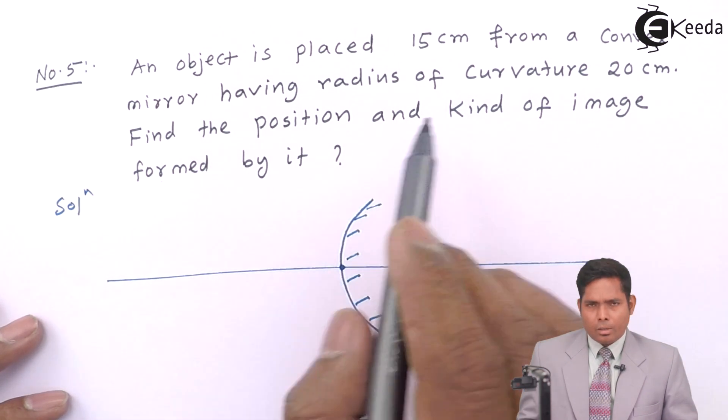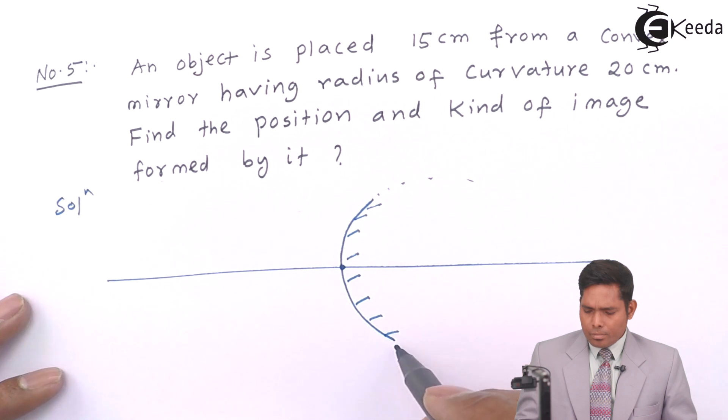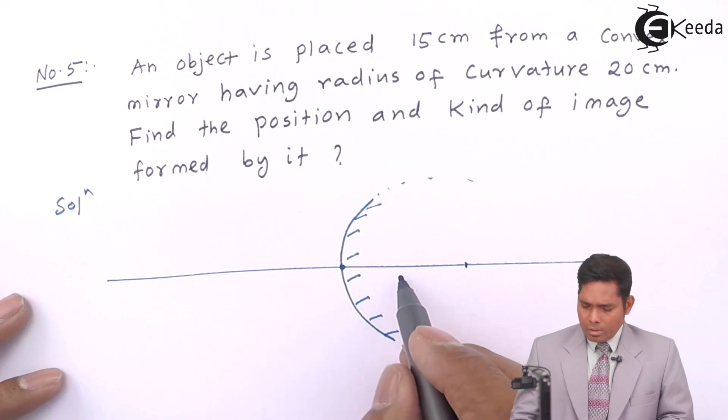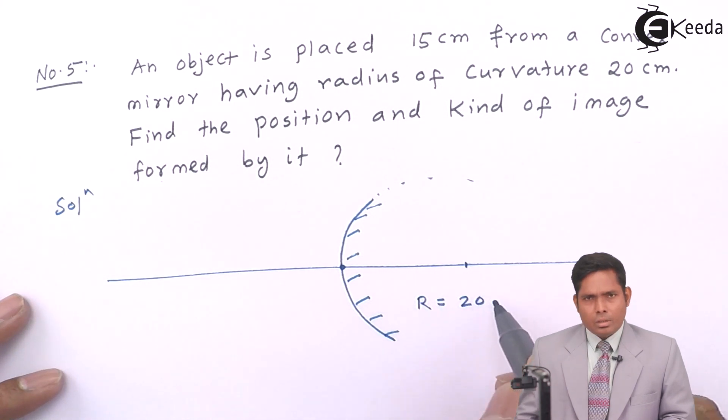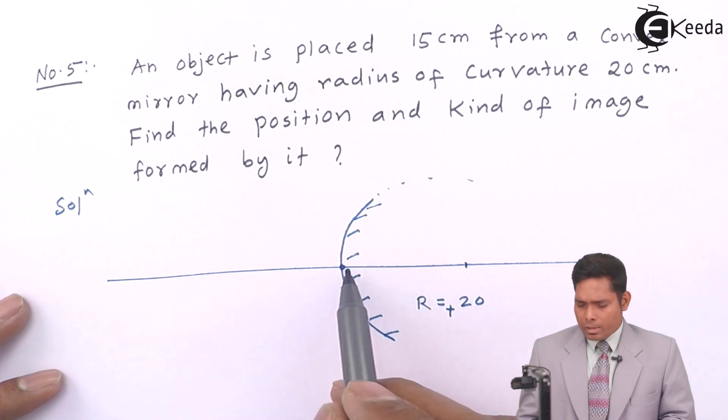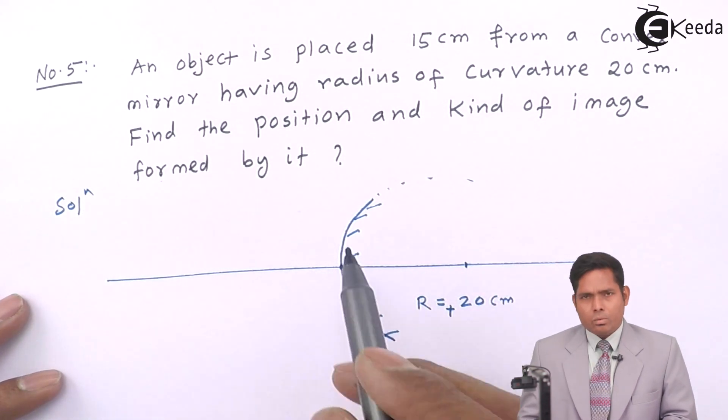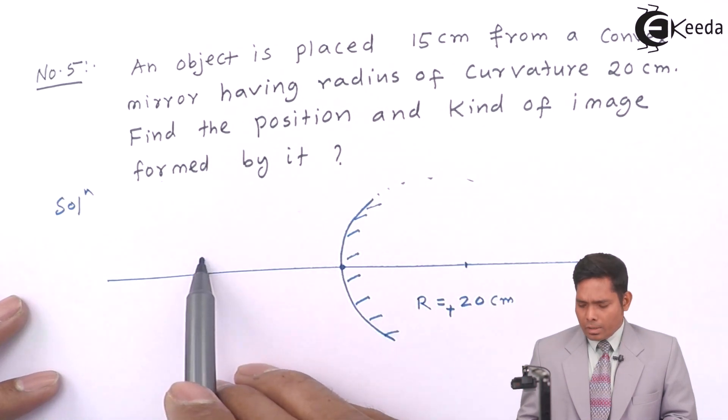From here, the object is placed 15 cm. And the radius of curvature is 20 cm. That means if I complete this, this is the radius of the sphere, which is 20 cm. And this is positive for convex mirror because this measurement is done towards the right side of the pole.